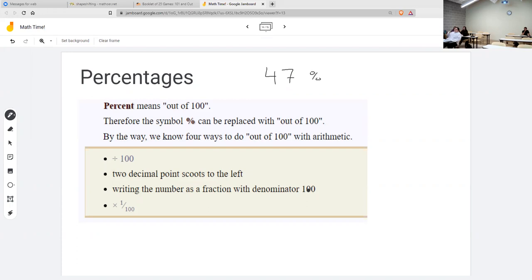If I want to do any math with that 47 percent, I need to exchange that symbol for something else, and we know four ways to do out of 100 with arithmetic. We could say that out of 100 means divided by 100. So I could say that 47 percent with a percent symbol is the same thing as 47 divided by 100. I'm just replacing the percent symbol with a divided by 100. Everyone with me so far?